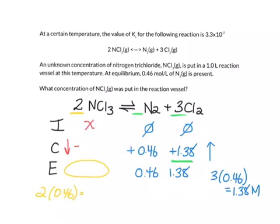The change, though, is going to be negative because we're going to use up 0.92 moles per liter of the nitrogen trichloride. So we're solving for this unknown, x minus 0.92.